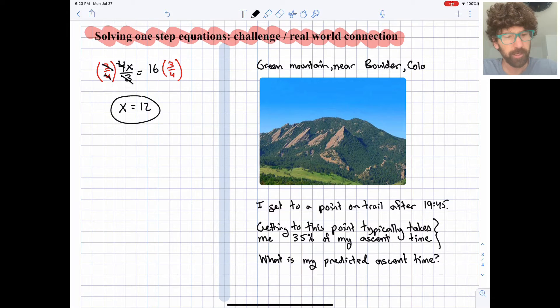And as a quick check, we can do is 4 times 12 over 3, is that equal to 16? 4 times 12 is 48 over 3, yep, it is equal to 16, so it checks out.